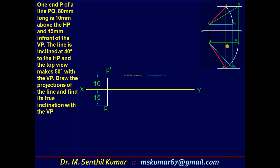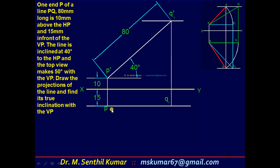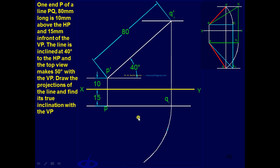Now we will see. As I said, the preliminary front view can be completed with the help of 40 degrees with respect to HP and 80 true length. So this is the preliminary front view line complete. The next step is with P as center, PQ1 as radius, draw an arc.